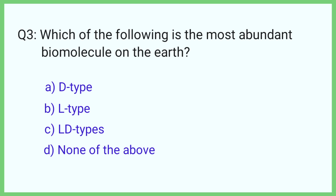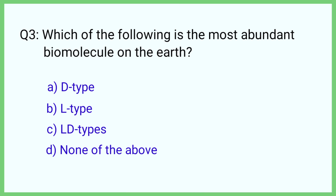Question number 3. Which of the following is the most abundant biomolecule on the earth? The correct answer is option A: D type.